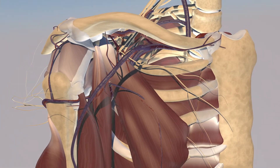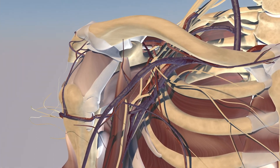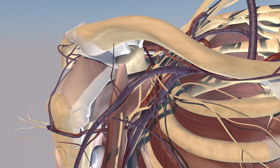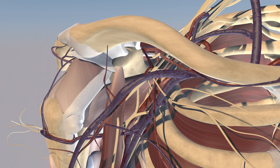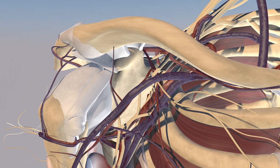Here we just rotated anteriorly and got rid of the underlying pec minor muscle and biceps muscles. You can appreciate the underlying coracobrachialis muscle, and you can also appreciate the musculocutaneous nerve piercing through the belly of the coracobrachialis muscle. We're also getting a better sense of the brachial plexus and how intricate it is and how it intertwines with the surrounding vascular structures.